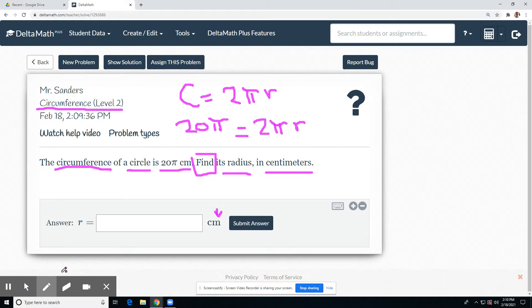What keeps r from being by itself? A times by 2 pi. What's the opposite of times by 2 pi? Divide by 2 pi. Make sure you do it to both sides.